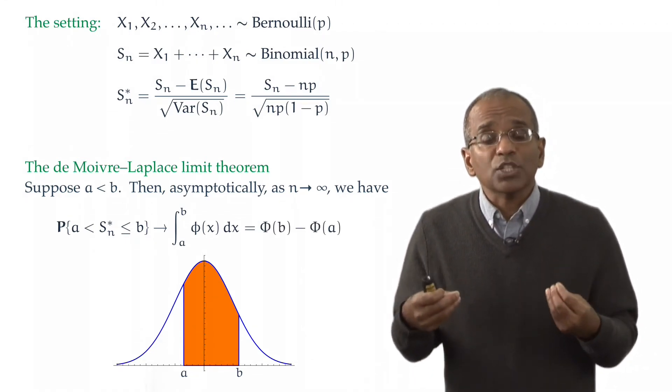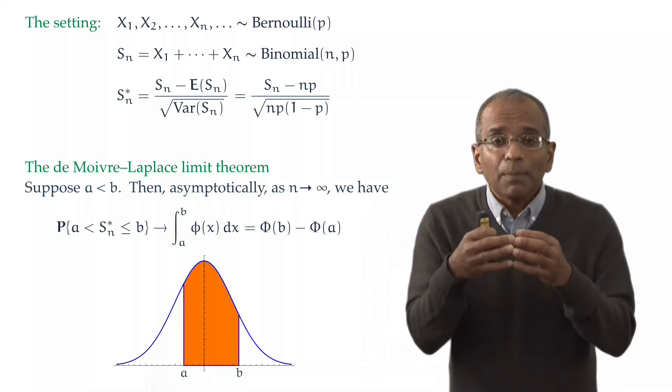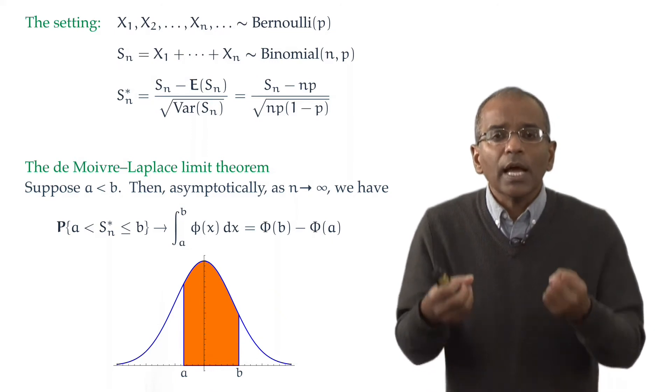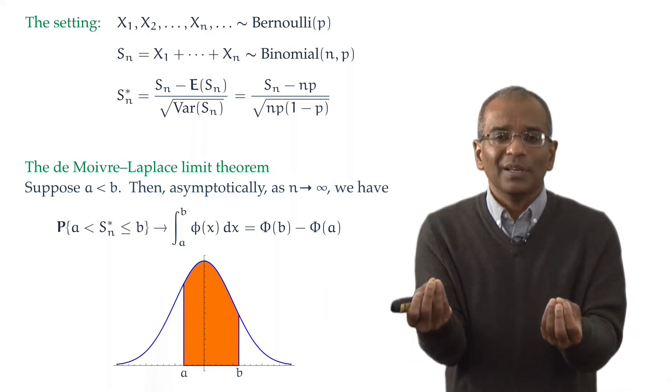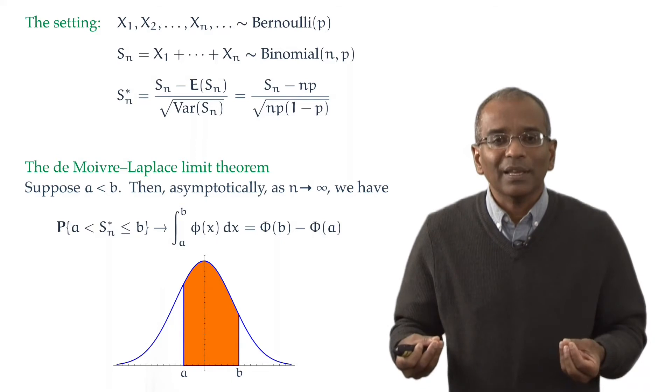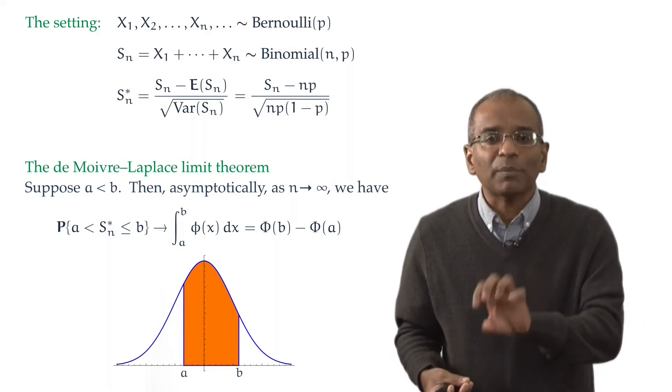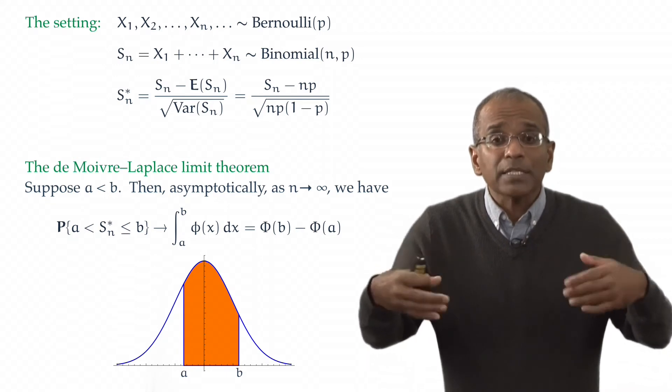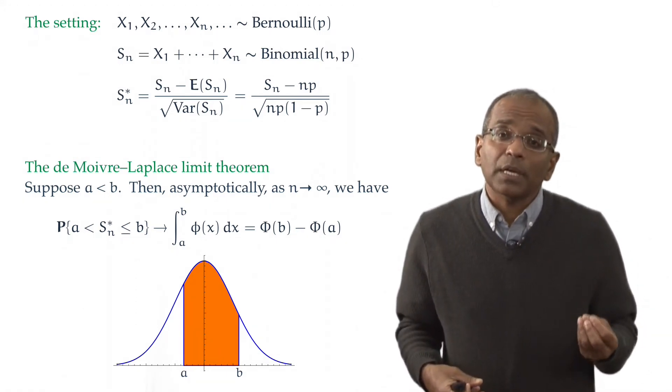The de Moivre-Laplace theorem says that the probability that a properly centered and scaled binomial lies between any two fixed values is given approximately by the area under the bell curve from A to B. And then this approximation gets better and better and better as n becomes large.